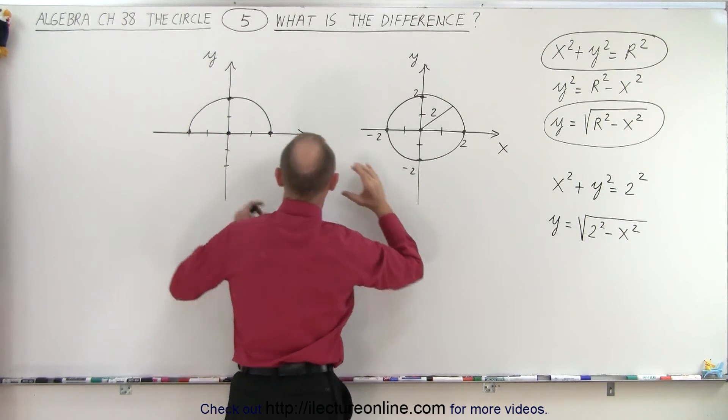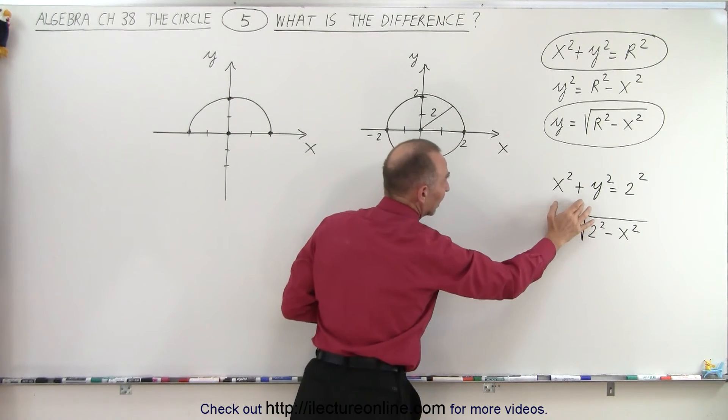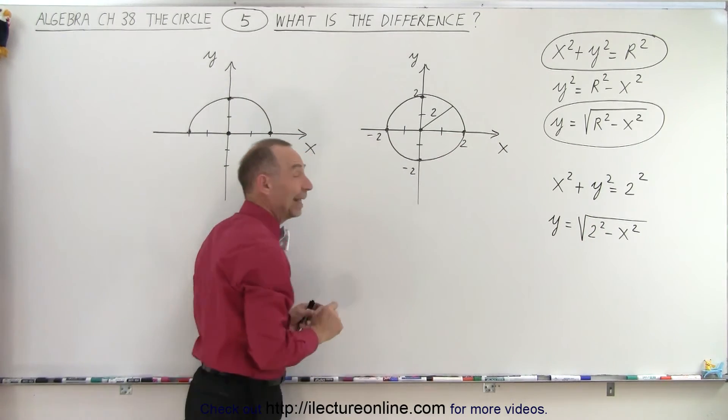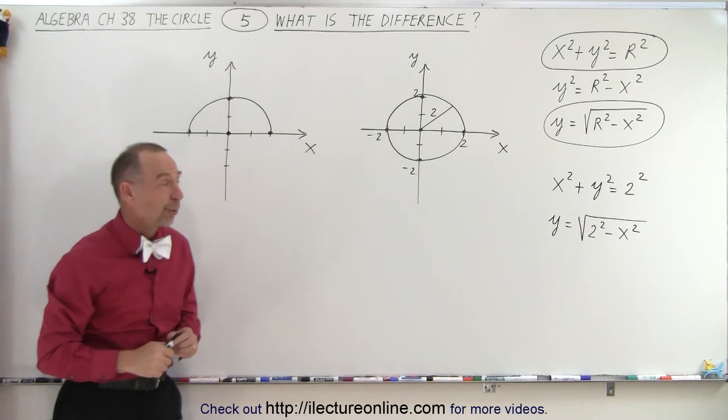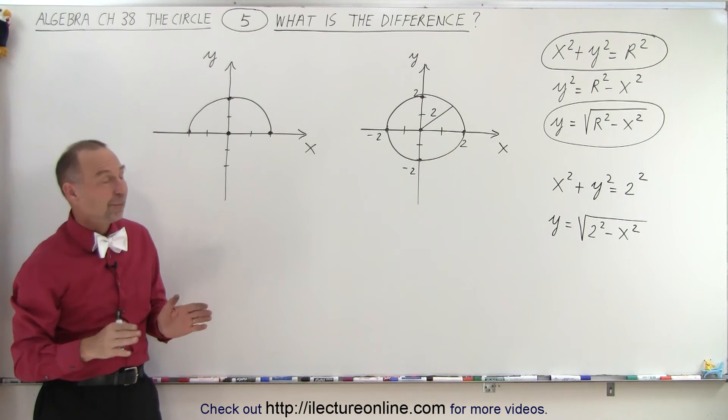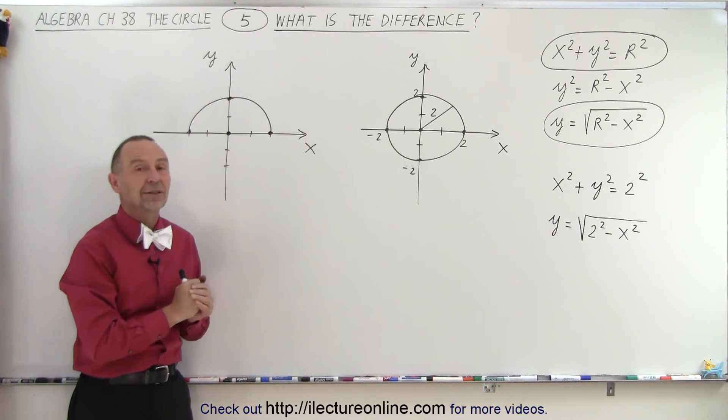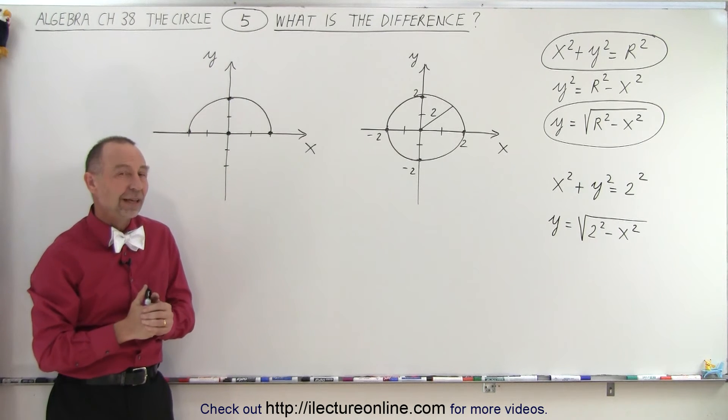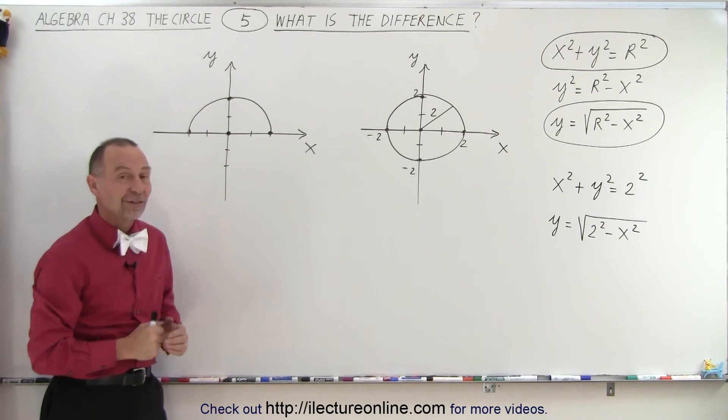So if you see it like this, it's only a half circle. If you see it like this, it's the full circle. And that is the difference between those two equations. It's very subtle, but based on the definition of the radical, we cannot have negative values, and therefore we see the difference like that.